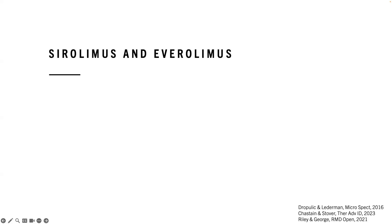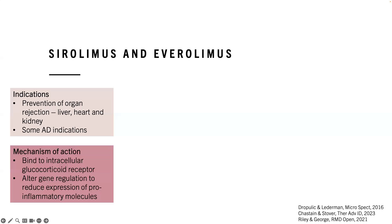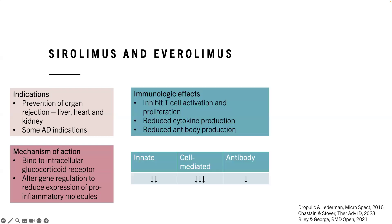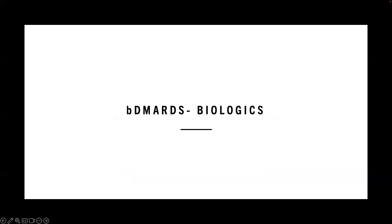mTOR inhibitors include sirolimus and everolimus, mostly used for prevention of organ rejection but also for some autoimmune disease indications. The immunological effects are inhibition of T cell activation and proliferation, reduced cytokine production, and reduced antibody production. The infection risks are similar to calcineurin inhibitors — viral infections and opportunistic infections — with increased risk of PCP, TB, and non-tuberculous mycobacteria.